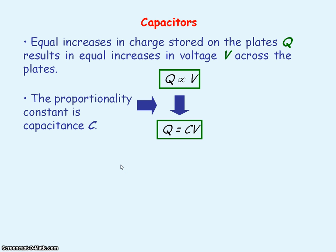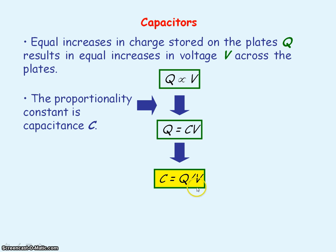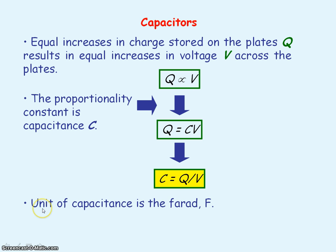From this equation we can get the definition of capacitance. The capacitance C is equal to Q divided by V. So the capacitance of a capacitor is equal to the charge stored on the capacitor per unit voltage across the capacitor. The unit of capacitance is the farad, given by capital F.